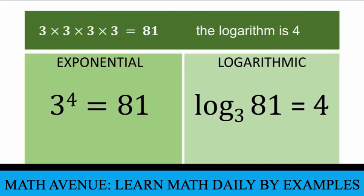So if you have 3 raised to 4 equals 81, we can write this in logarithmic form this way. We write the word 'log' for logarithm and identify the base — the base of 3 raised to 4 is 3. We now say: the logarithm to the base 3 of the power 81 is equal to the exponent 4. If you want to express the exponent explicitly, we write the log of the power to the base — the logarithm of 81 to the base 3. Another way of reading this is: the logarithm to the base 3 of 81 equals 4.